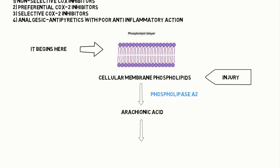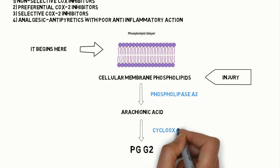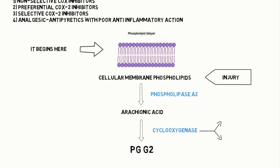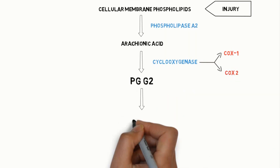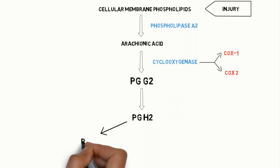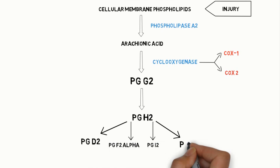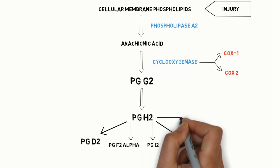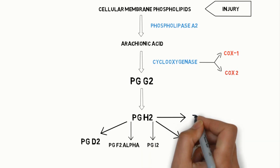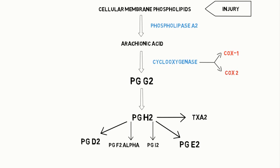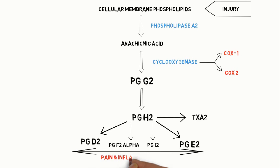Prostaglandins are produced with the help of the cyclooxygenase enzyme. There are two isoenzymes of COX: COX I and COX II. Prostaglandin G2 is converted into PGH2, which is further subdivided into prostaglandin D2, prostaglandin F2 alpha, prostaglandin I2, and prostaglandin A2. There is also release of thromboxane A2, but thromboxane A2 has no role in pain and inflammation.